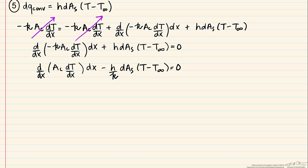So we use the chain rule and divide through by both a sub c and dx, and we're left with d squared t dx squared, plus 1 over a sub c, dA sub c dx, all multiplied by dt dx, minus 1 over a sub c, and now here's our h over k, dA sub s dx, multiplied by t minus t infinity, and this entire expression equals zero.